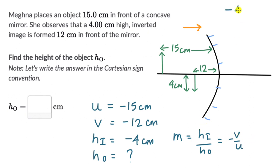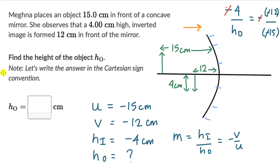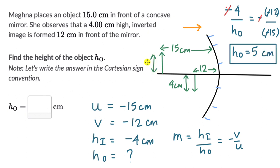Using the magnification formula: HI divided by HO equals minus V by U. HI is minus 4 and V is minus 12, U is minus 15. So minus 4 divided by HO equals minus of minus 12 divided by minus 15. The minuses cancel, and working this out, HO comes out to be 5 cm. You can try more questions from this exercise in the lesson, and if you're watching on YouTube, check out the exercise link in the description.